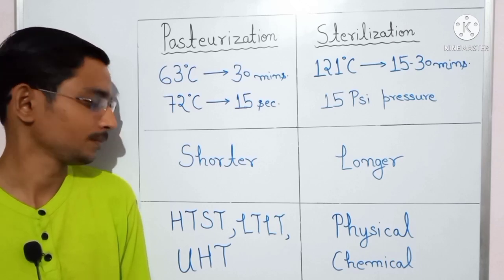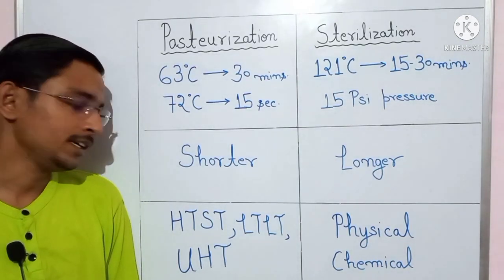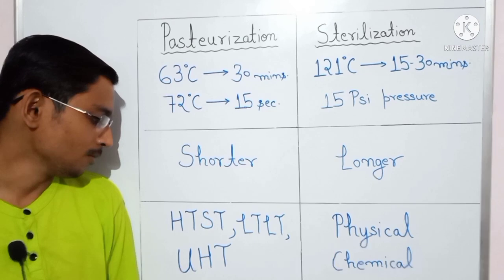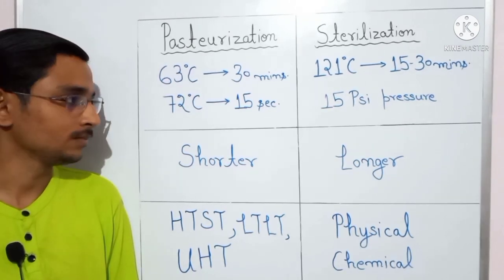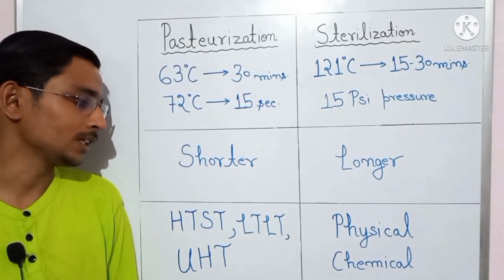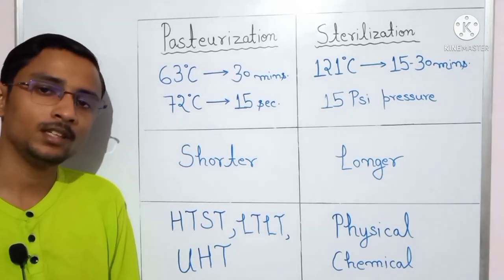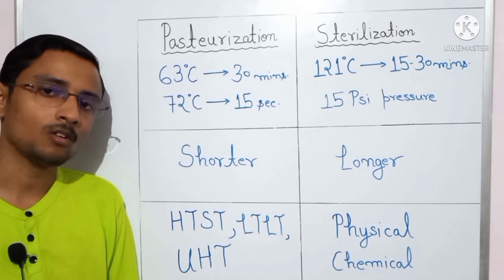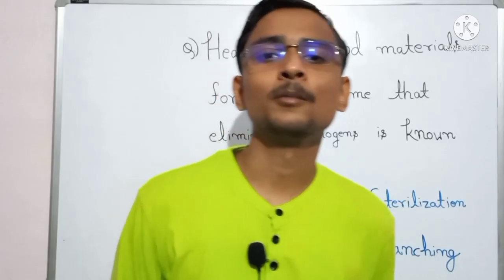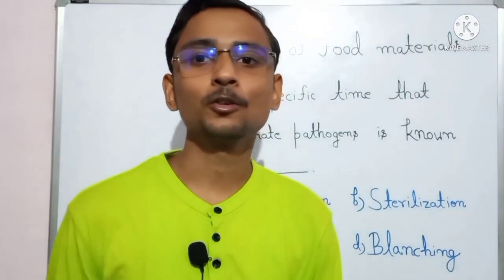Pasteurization has three types: high temperature short time (HTST), low temperature long time (LTLT), and ultra-high temperature (UHT). Sterilization comes in two types: physical and chemical, which include sterilization with heat, gas sterilization, and cold sterilization. Now that we know the topic, we are eligible to solve exam questions.